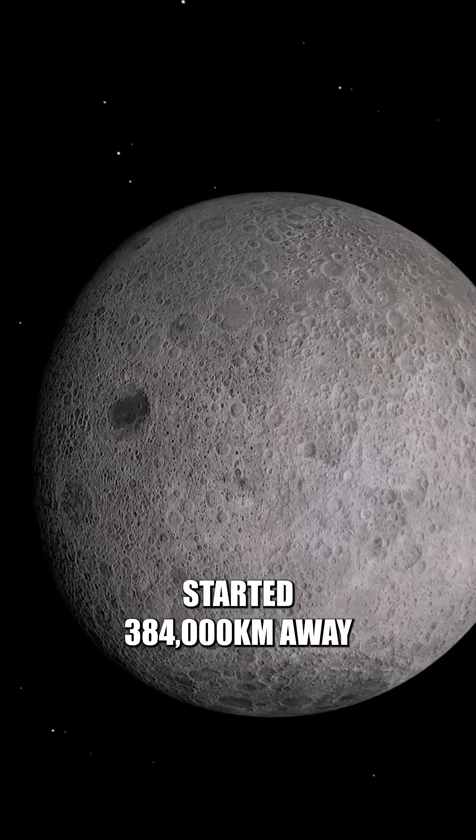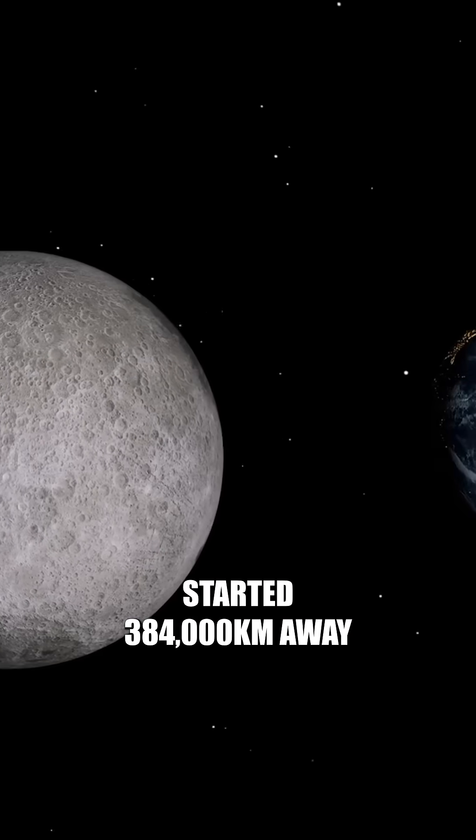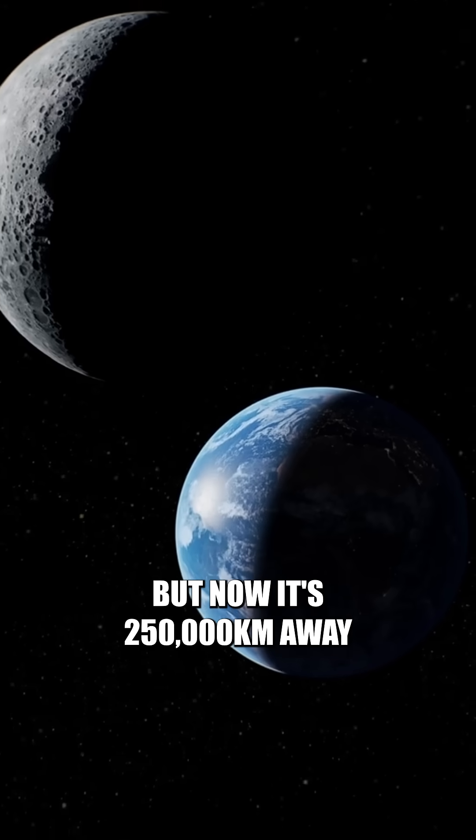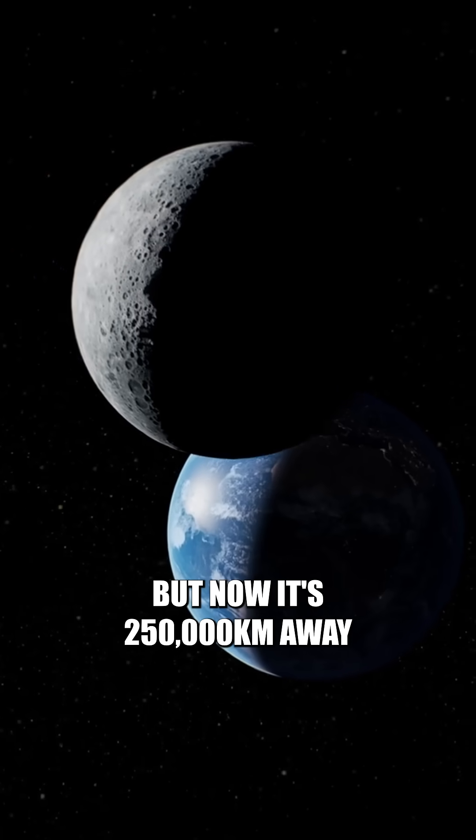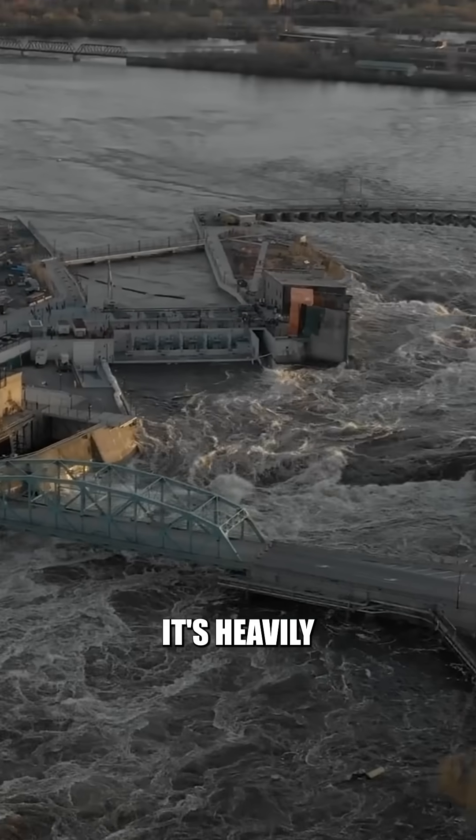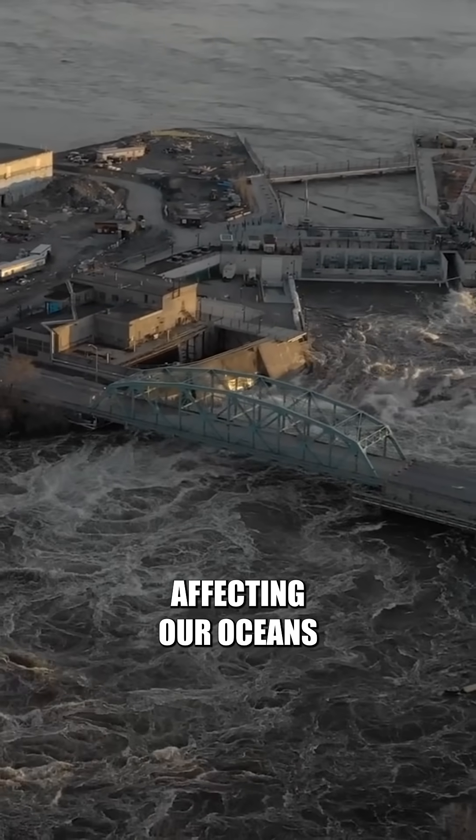Okay, the Moon started 384,000 kilometers away from Earth, but now it's 250,000 kilometers away. With the Moon this much closer, it's heavily affecting our oceans.